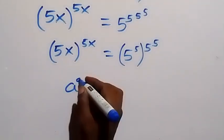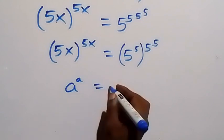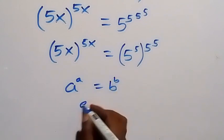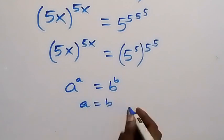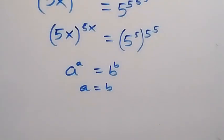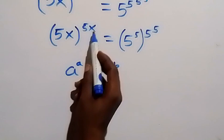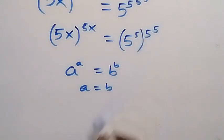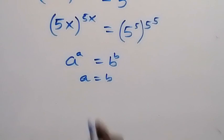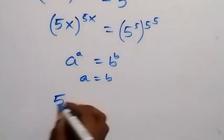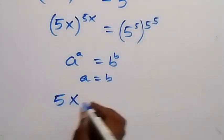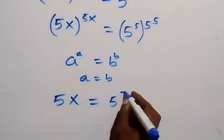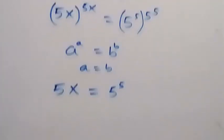We use the pattern: when a raised to power a equals b raised to power b, we can conclude that a equals b. Similarly here, 5x raised to power 5x equals 5 raised to power 5 raised to power 5 raised to power 5, so we conclude that 5x equals 5 raised to power 5.